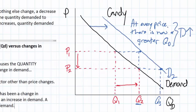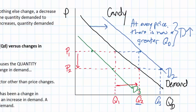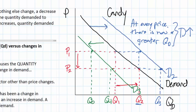Let's show a decrease in demand on this graph. If something other than the price of candy changed causing demand to decrease, what we would see is a leftward shift of our demand curve. I'll label this curve D3. What does a decrease in demand mean? It means that at every price — both P1 and P2 — a smaller quantity is now demanded. At P1, we can now see that a smaller quantity is demanded; I'll call this Q0. And at P2, a smaller quantity is demanded; I'll call that Q4. When demand decreased, consumers demanded a smaller amount of candy at every price. So if demand increases, there will be a larger amount of candy demanded at every price, and if demand decreases, there will be a smaller amount demanded at every price.